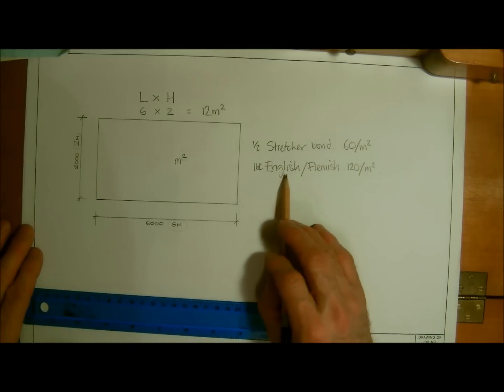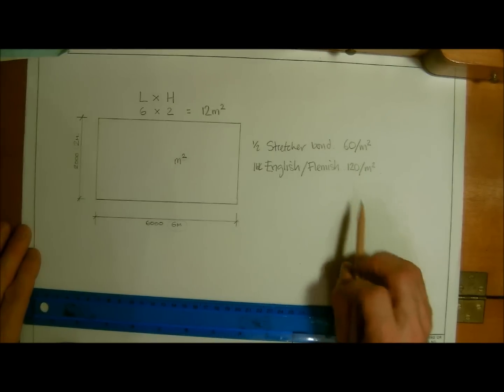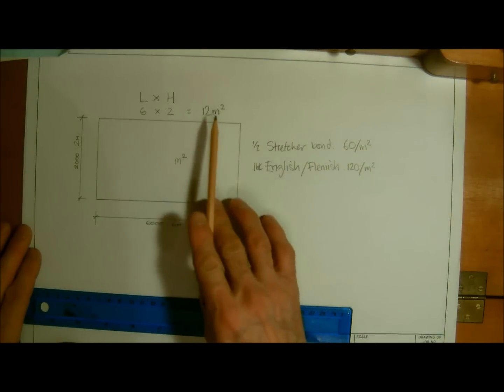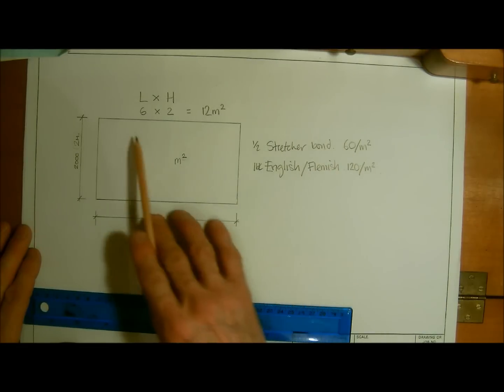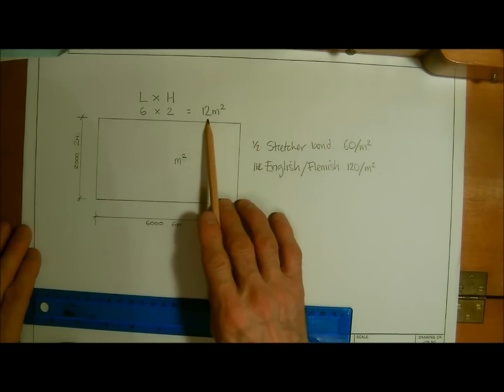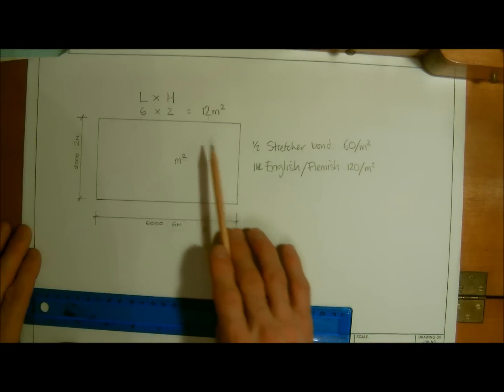So if we're looking at a wall in English or Flemish bond, with it being one brick thick wall, it will be 120 bricks per meter squared. So with this we can see that to find out how many bricks we need, if it's a stretcher bond, all we need to do is times twelve by sixty. And that would give us the total amount of bricks that we need.